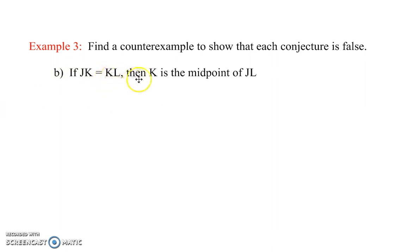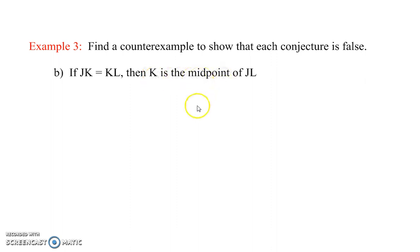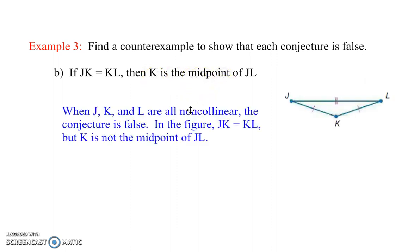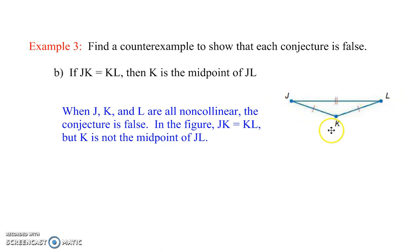If JK is equal to KL, then K is the midpoint of JL. Is that always true? Can we come up with an example where K is not the midpoint? Well, if J, K, and L are not collinear — if they're not on one straight line — then K doesn't have to be the midpoint of the two, but the distance could still be equal.